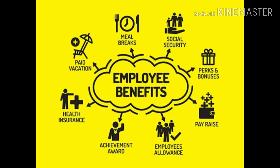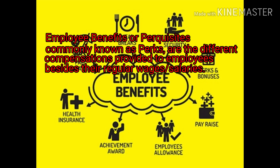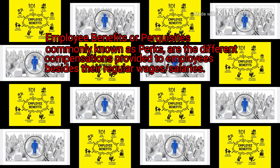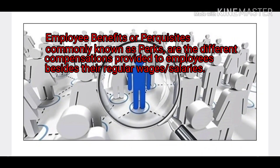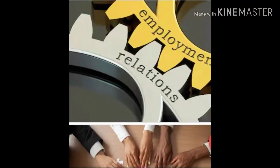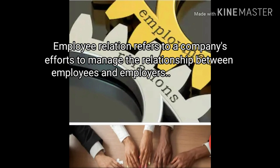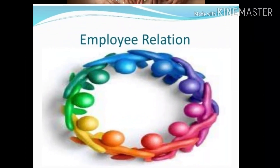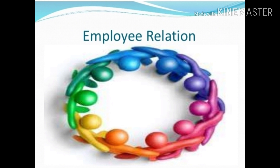The fourth function covers employee benefits and relations. Employee benefits — commonly known as perks — are different compensations provided to employees besides their regular wages or salaries; these may or may not be monetary. They include insurance such as group health and family accident coverage, recruitment benefits, sick leave, vacations, education funds, etc. Employee relations refers to a company's efforts to manage relationships between employers and employees. An organization with a good employee relations program provides fair and consistent treatment to all employees so they remain committed and loyal.